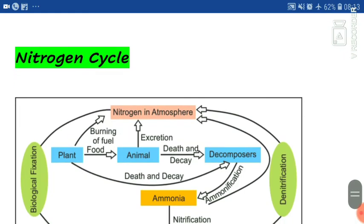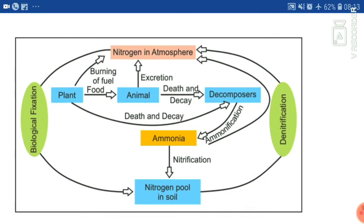Now let's understand the nitrogen cycle. A cycle means you start from one point and go in a circle to return to it — that is the nitrogen cycle. Atmospheric nitrogen gets converted into nitrogenous compounds through this cyclic process.